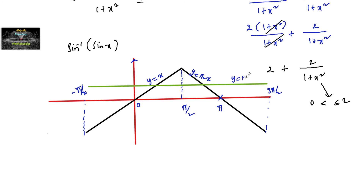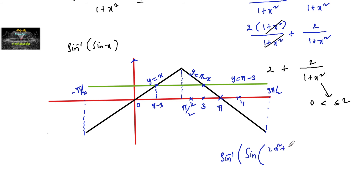This is the line y=π−3. For the piece y=x, the point is π−3 on the graph, and for y=π−x, the corresponding value is 3. Since our expression (2x²+4)/(1+x²) lies between 2 and 4, the values 2 and 4 fall in this region. The condition sin⁻¹(sin((2x²+4)/(1+x²))) < π−3 means the graph must be below the line y=π−3.